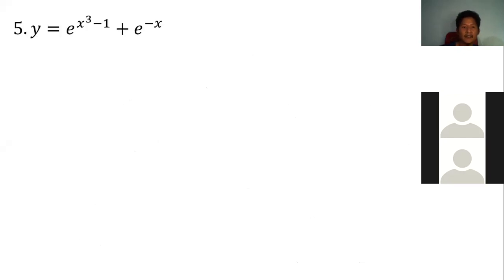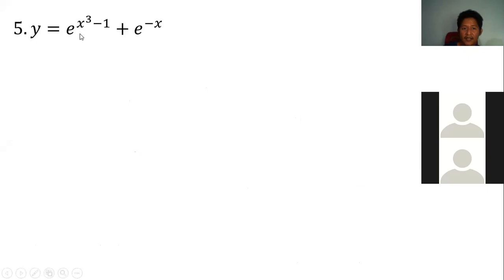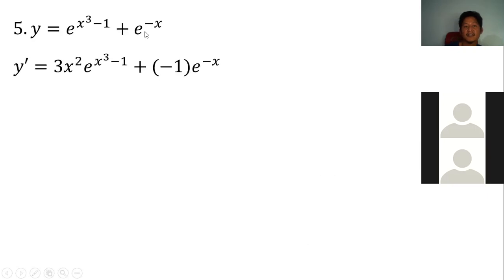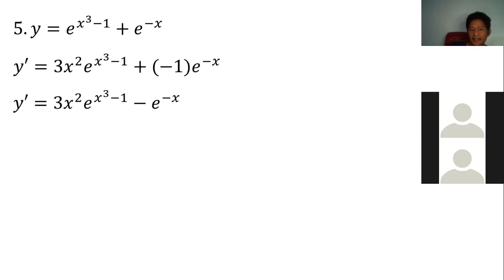Next example, number 5. This is very similar to example number 2. We copy e to the (x cubed minus x), then multiply by the derivative of the exponent. The derivative of x cubed is 3x squared, and the derivative of negative x is negative 1. That's why we get that result.